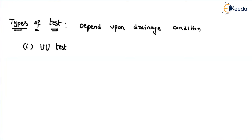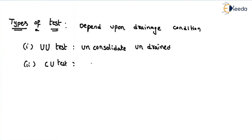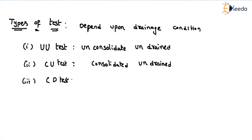As we already know, the first stage is called the consolidation stage. In the UU test, drainage is not allowed in the consolidation stage, and in the shearing stage also drainage is not allowed. The next one is the consolidated undrained test — the CU test. And the third one is the consolidated drained test — the CD test, where C represents consolidated and D represents drained. There is also one more possibility, UD, but it is not physically useful, so it is not discussed.